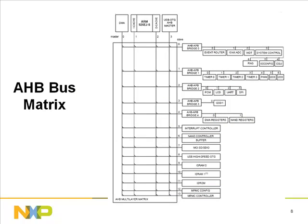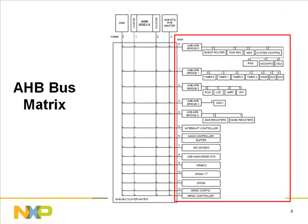Looking at the AHB bus matrix — there are 14 slave ports in this system, all interconnecting with the masters over the bus matrix. A multi-layer AHB bus matrix allows increased bandwidth compared to a single layer when more than one master is active. Master-to-slave mixing can be done without arbitration; arbitration only becomes necessary when more than one master wants to access the same slave simultaneously.